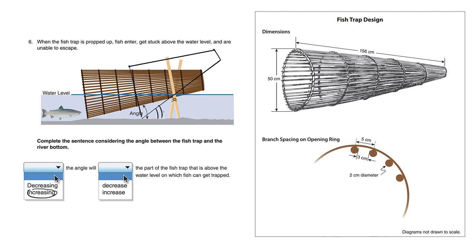When we increase the angle here—you can call this angle theta if you wish—it will increase the part of the fish trap that is above the water level on which fish can get trapped. As you can see, more of the fish trap is sticking out of the water.